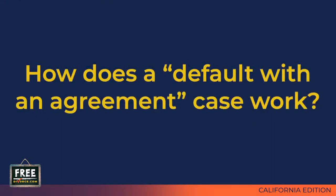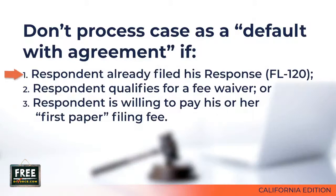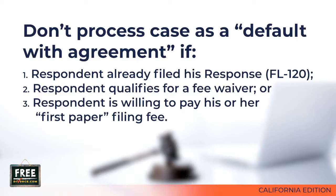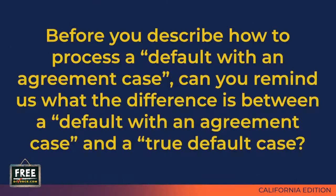How does a default with an agreement case work? If the respondent has already filed his or her response FL-120, has qualified for a fee waiver, or is willing to fill out the FL-130 and pay his or her first paper filing fee, then you don't need to hassle with the default paperwork. You can simply take your assembled divorce judgment, together with the additional court forms described in the next video, and file everything with the court. You can skip the entire default procedure.